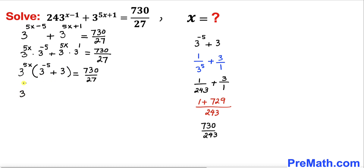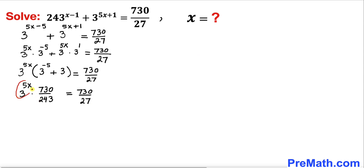I can now replace the bracket with 730 divided by 243, so we have 3 power 5x times 730 divided by 243 equals to 730 divided by 27. To isolate 3 power 5x, I am going to multiply both sides by the reciprocal 243 divided by 730. On the left hand side we end up with just 3 power 5x.